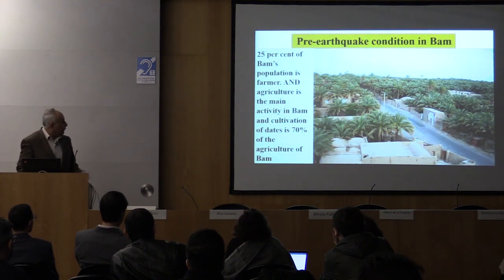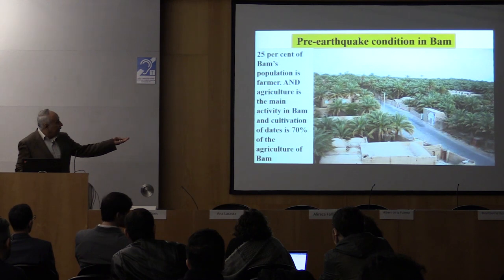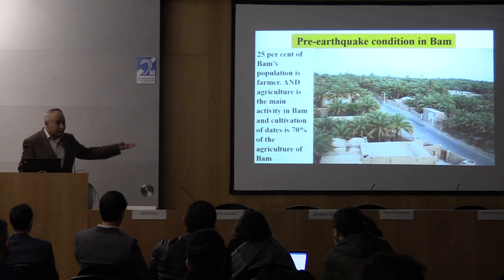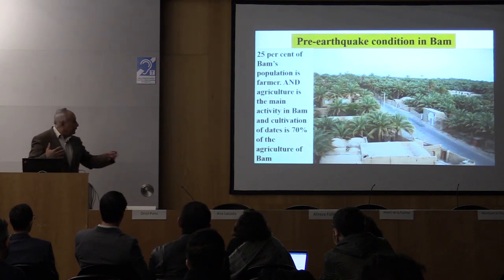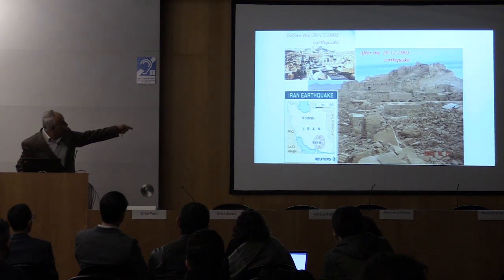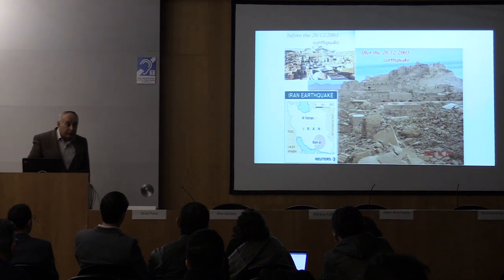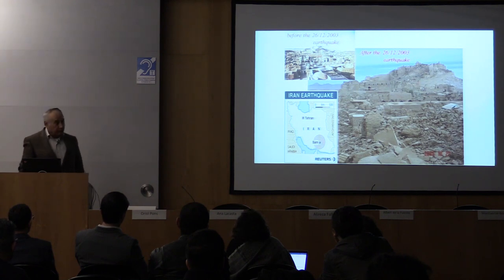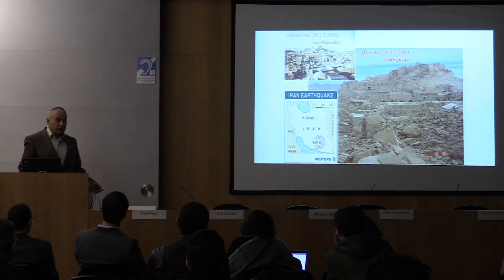This is the pre-earthquake condition in BAM. As you can see, it is in an arid area but you cannot feel it — it is hot, but people and environment worked together very well. After the earthquake, this is the citadel of BAM: the left image is before the earthquake, famous worldwide, and after the earthquake unfortunately 90% of the citadel — called Arg-e Bam — was razed to the ground. It was the biggest mud-brick building in the world.